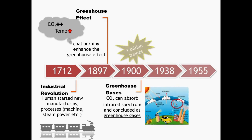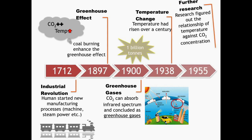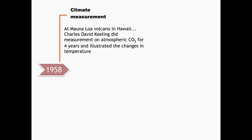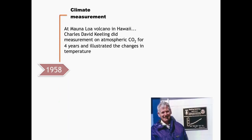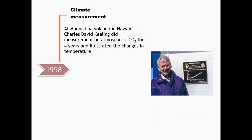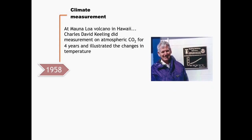By 1927, carbon emissions had reached 1 billion tonnes per year. In 1938, it was discovered that the temperature had risen over a century, and research in 1955 established that a doubling in CO2 concentrations would increase the global temperature by about 3 to 4 degrees Celsius. In 1958, Charles David Keeling ventured to Mauna Loa Volcano in Hawaii and fabricated a series of measurements on atmospheric CO2 levels over a four-year period, discovering a gradual increase in CO2 concentration, something not known previously.